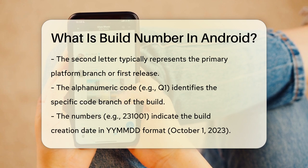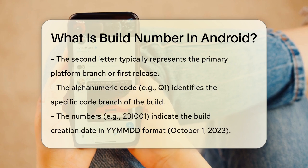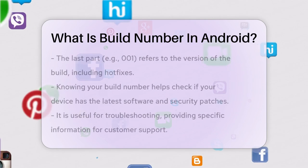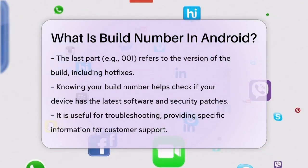So this build was made on October 1, 2023. Finally, 001 is the version of the build, which can sometimes include an alphanumeric code for hotfixes.